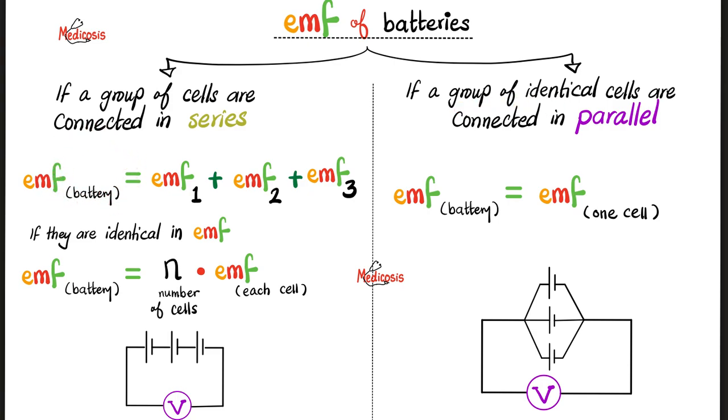But what if we have a group of identical electrical cells, but this time they are connected in parallel, not in series. Not like this in series, but in parallel. One on top of the other, on top of the other, and usually they share origins on the left and on the right. In this case, the electromotive force for the entire battery equals the electromotive force of just one cell.